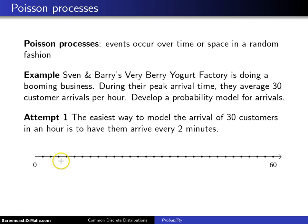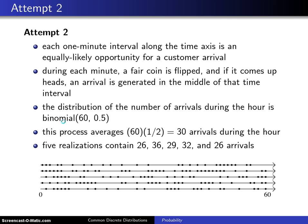This is just kind of like delivering the customers on a conveyor belt to Sven and Barry's yogurt factory. If you took this particular model to Sven and Barry and ask them, what do you think of that? They would probably say, no good. That's not the way customers come into our shop. They come in in a much more random fashion. So, attempt number one is a fail and here comes attempt number two.